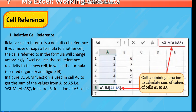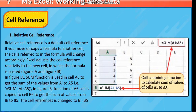In figure 1b, the formula of cell A6 is copied to cell B6 to get the sum of values from B1 to B5. The cell reference is changed to B1:B5, that is =SUM(B1:B5).